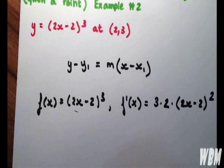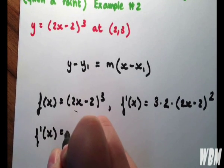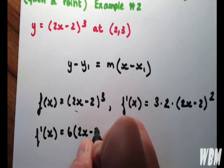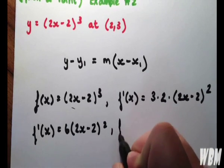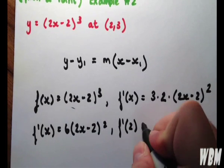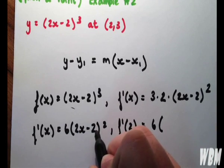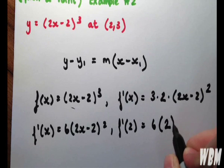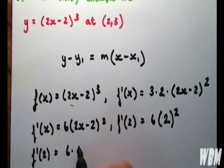Now we can write that a little bit neater, and we now concern ourselves with f'(2), which is 6 times 2 times 2, which is 4 minus the 2, which is 2 squared. So we have 6 times 4, which is, of course, 24.